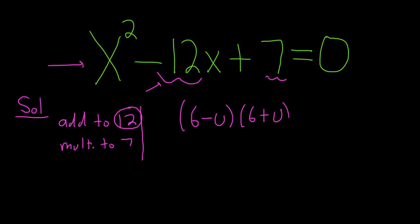These are the answers. The answers will always be this number here of the 12 divided by 2 minus u, and then that number plus u. When you multiply them, we know we have to get 7. So we set it equal to 7.